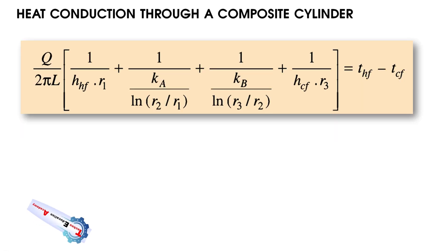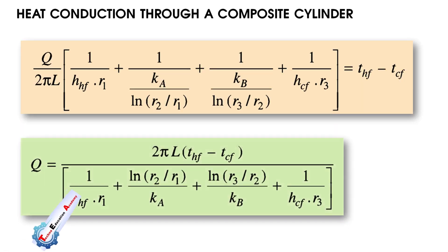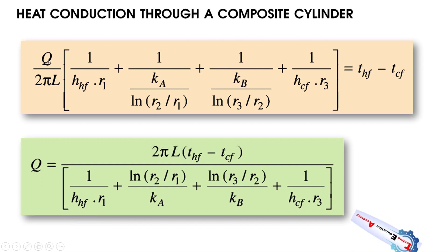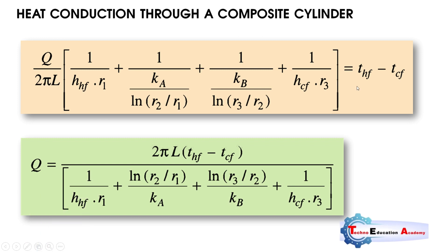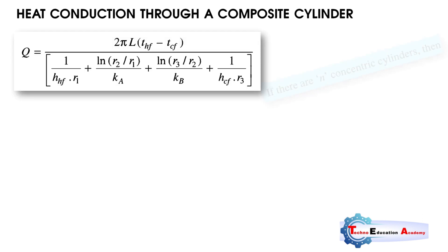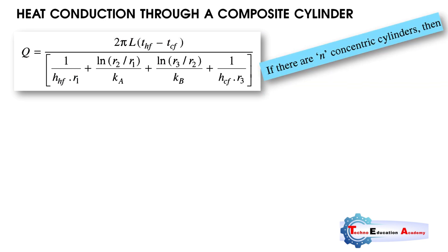Continuing from the previous step, we now isolate Q. The remaining terms go to the denominator, and 2πL multiplies with the temperature difference T_hf minus T_cf, giving us: Q = 2πL·(T_hf − T_cf) / [1/(H_hf·r₁) + ln(r₂/r₁)/K_a + ln(r₃/r₂)/K_b + 1/(H_cf·r₃)]. This equation is further simplified for the general case.